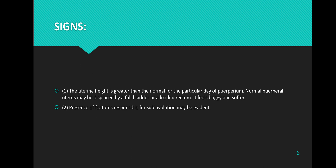The signs include: the uterine height is greater than normal for the particular day of the puerperium. The normal puerperal uterus may be displaced by a full bladder or a loaded rectum. It feels boggy and softer than expected. Presence of features responsible for sub-involution may also be evident.